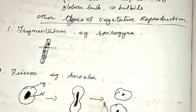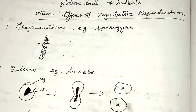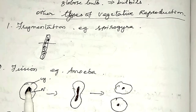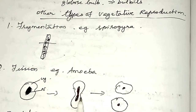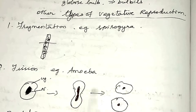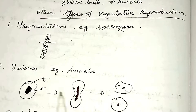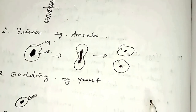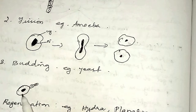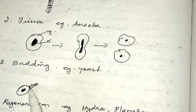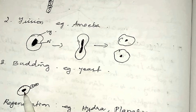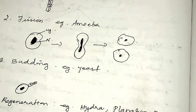The next one is fission — fission in amoeba. Amoeba reproduces by simple fission: binary fission, multiple fission, etc. In fission, when the amoeba matures, the nucleus and cytoplasm will elongate, making a constriction in between, which divides the cell into two daughter cells. This is how amoeba reproduces vegetatively. The next one is budding — example: yeast. The yeast cell will develop new cells as buds, and at a certain stage these buds get detached from the parent cell and develop into new individuals.